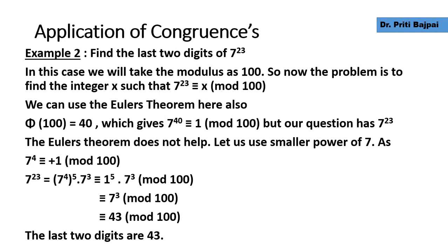We need to use a smaller power of 7. We can verify that 7 to the power 4 is congruent to 1 mod 100. So 7^23 = 7^(4×5 + 3) = (7^4)^5 × 7^3. This gives us 1^5 × 7^3 mod 100, which equals 343. Dividing 343 by 100, the last two digits are 43.